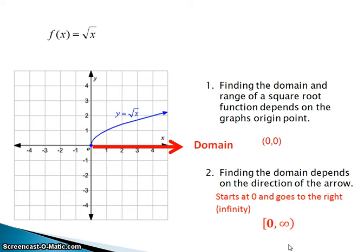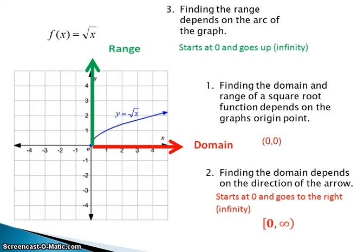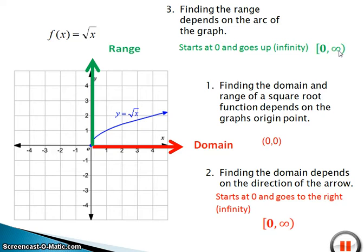That takes care of domain, but what about range? Range depends on the arc of a graph. We can see that this graph is arcing up, so we determine that the range starts at y equals 0. We draw a line with an arrow for the range and determine it starts at 0 and goes up to infinity. Using interval notation, we write the range as [0, ∞). Zero is included so we use the square bracket, but for infinity we use parentheses. Pause now and copy everything down on this slide, along with any questions you might have.